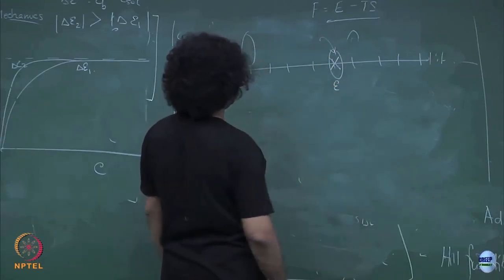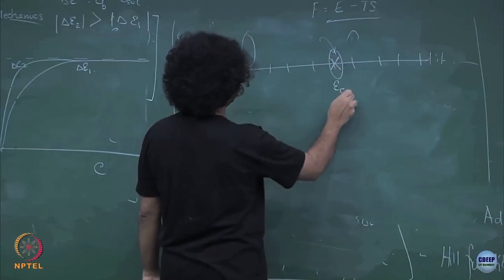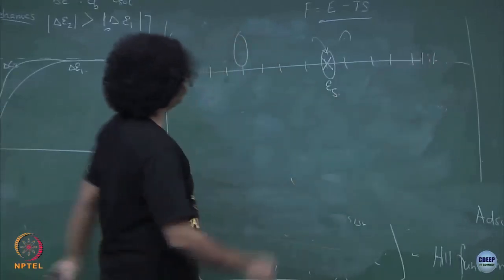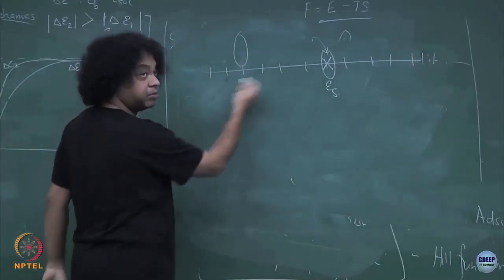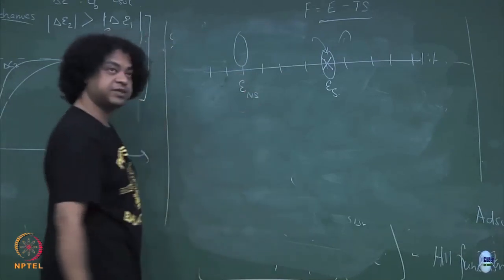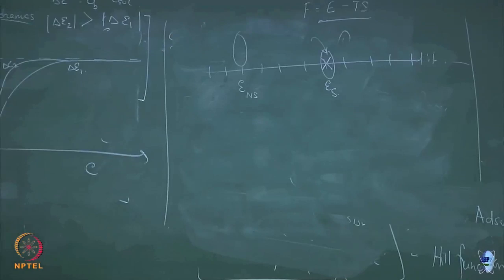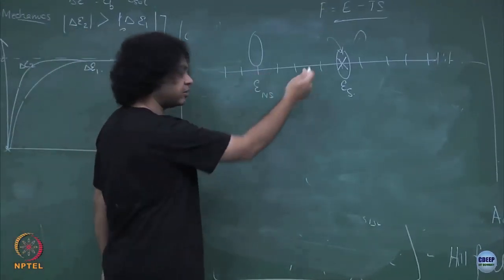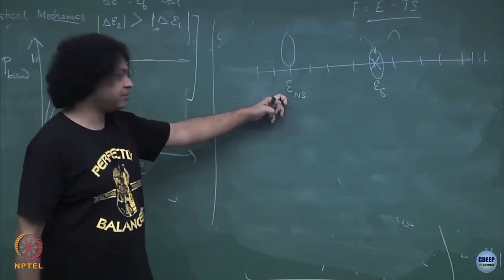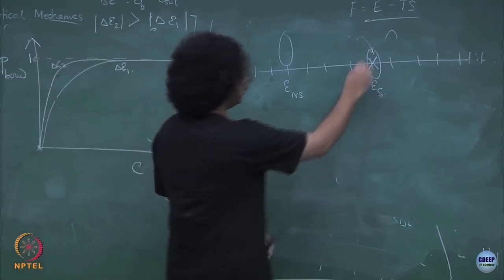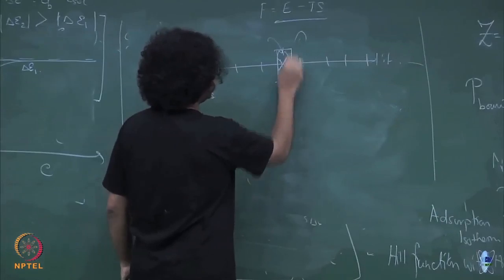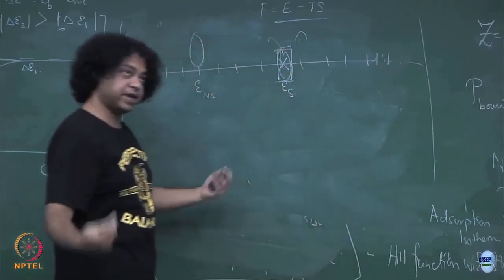It has some energy for going and sitting on this specific site, let me call it epsilon specific. But it can also bind non-specifically to other sequences, and let me call the energy for that as epsilon non-specific. Again it is an approximation — that energy will depend on the exact sequence — but let me say that all non-specific binding sequences will have some energy epsilon ns. When it goes and sits on the specific site to start reading the gene, that energy is lower, and I will call it epsilon s.